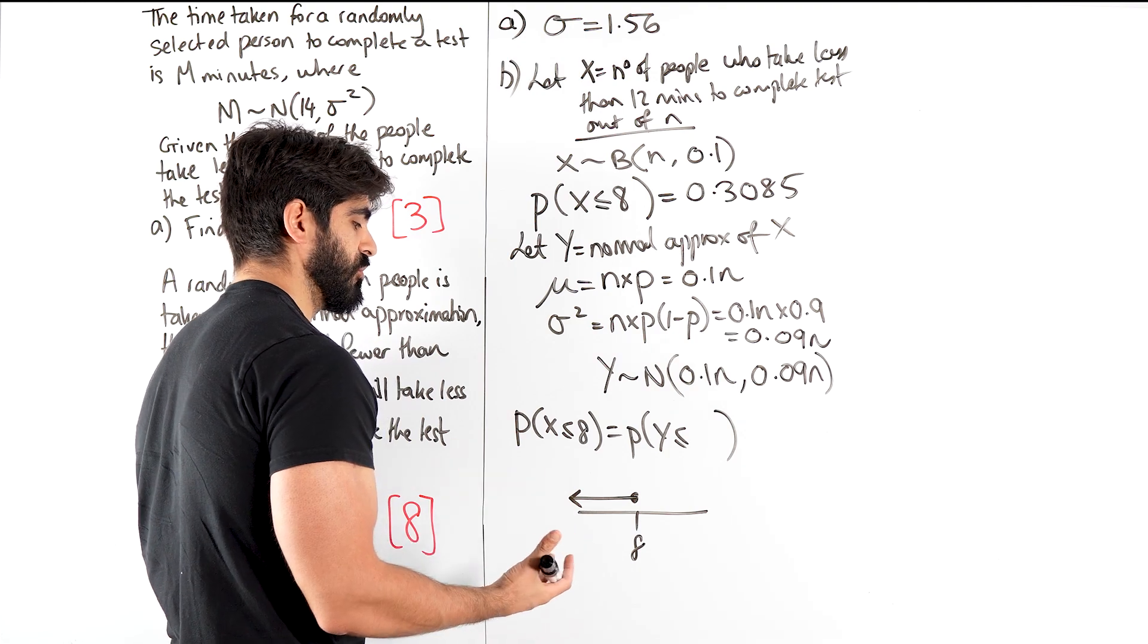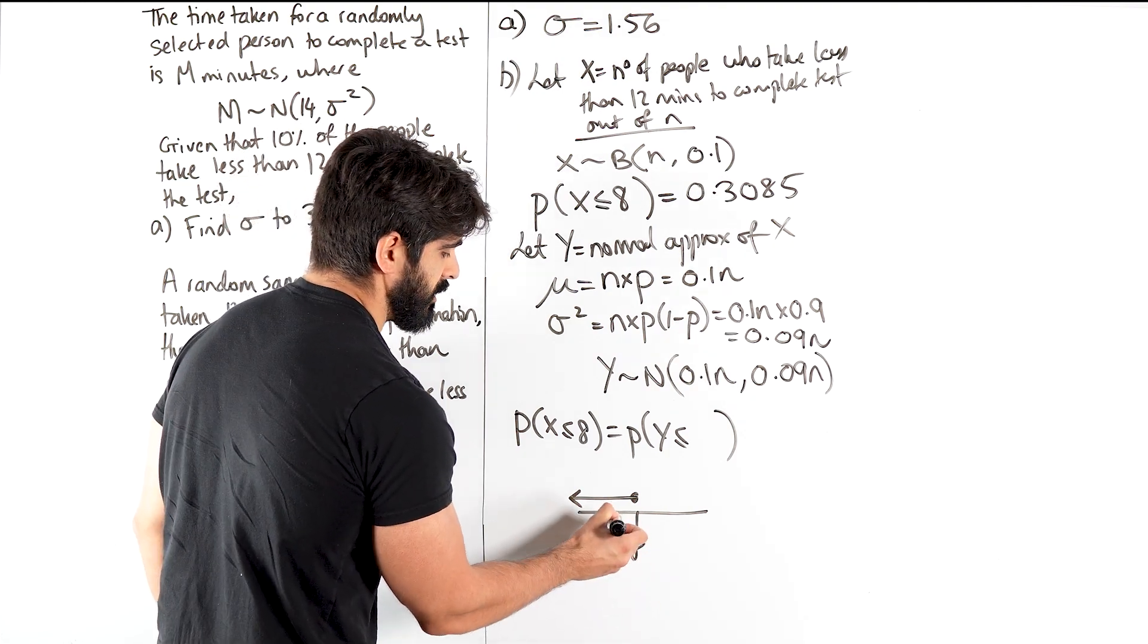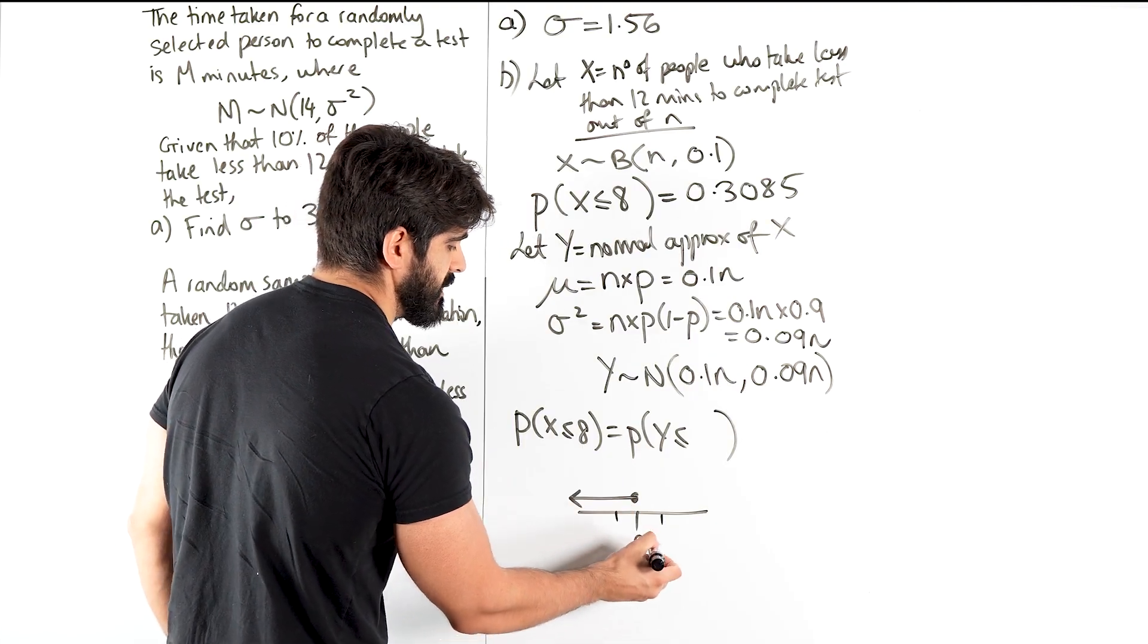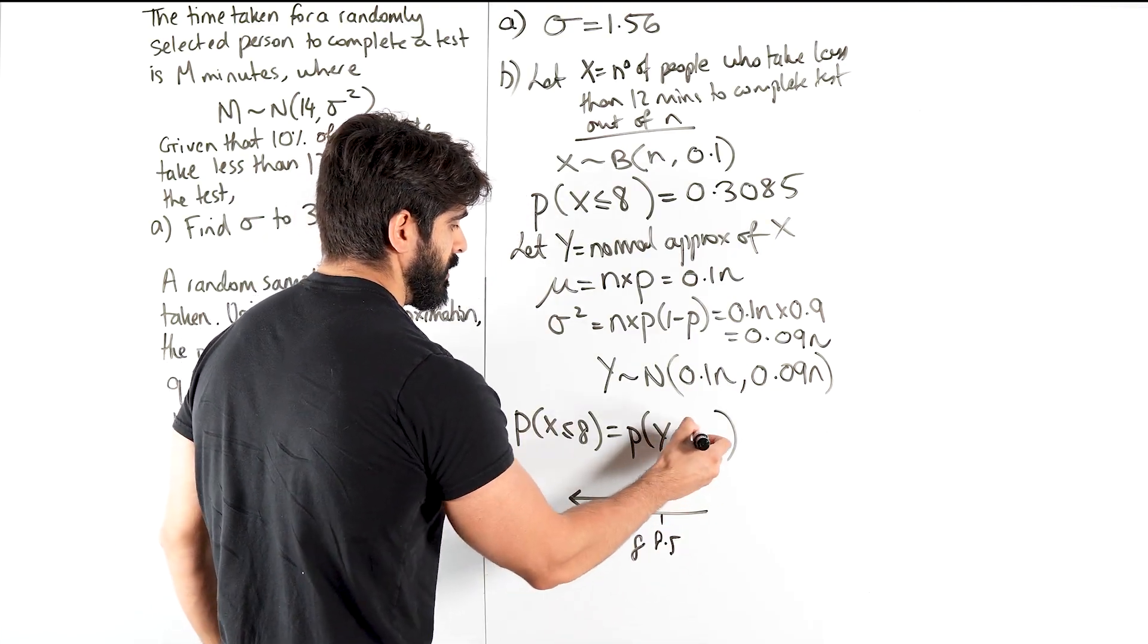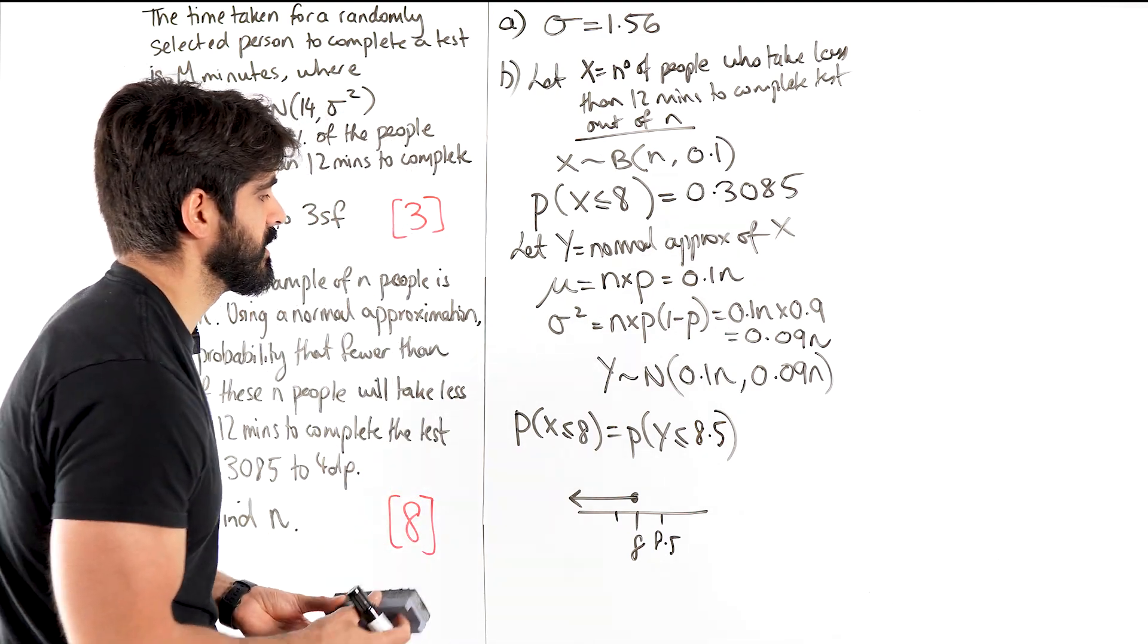So if you look at the number line, we have 8. We want all of this, right? But when we come to the normal distribution, because it is continuous, we can have decimals as well. So we're thinking about the lower and upper bound. Now 7.5 is already in there, so it's 8.5. We need to extend our domain to 8.5.